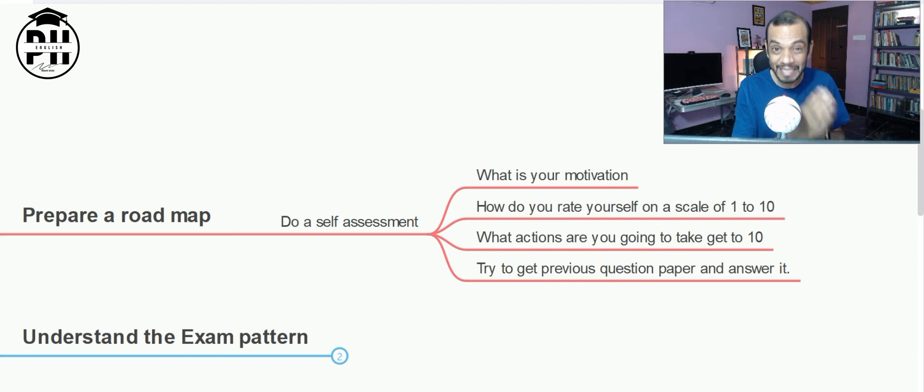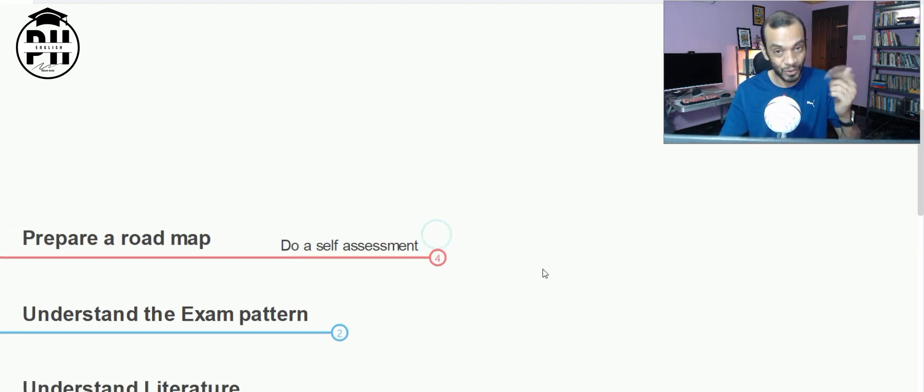That is what I said - what actions are you going to take? Are you ready to dedicate two hours for the next three months to get your dream, or are you just going to wish that you will crack it? Another one is trying to get a previous question paper - look for the resources, dig it out, and go through it. Then match it with your score you have given.